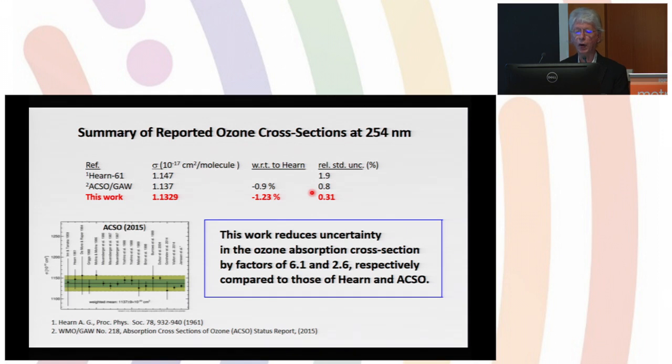Here I'm showing how our result compares against the Hearn value, which is the current standard value. We have shifted the cross-section by 1.23 percent downward—the cross-section is lower than it was—and its uncertainty is a factor of six times smaller. This consensus value compared to the Hearn value, which is currently used for the SRP.